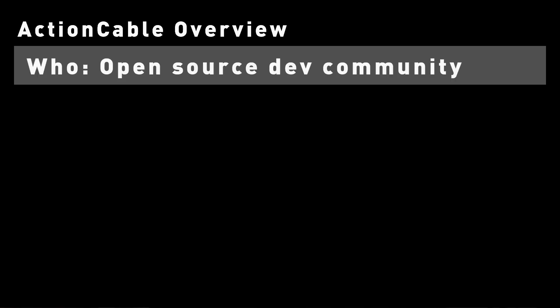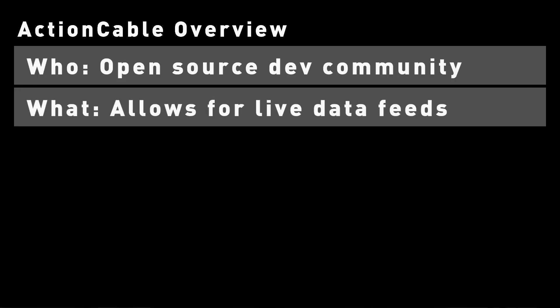Let's go through an overview of Action Cable. First, looking at the WHO: it was developed by the Rails open source community. For the WHAT: it's a module in Rails 5 that leverages web sockets to bring state to an application. This means that your users won't have to refresh a page to get new data — it can be pushed to them from the application itself. Also note, it doesn't require archaic forms of development such as polling, which can really hurt performance.